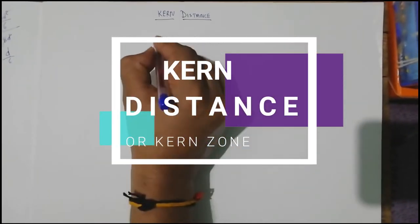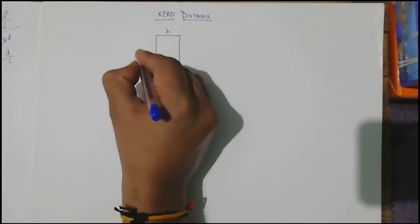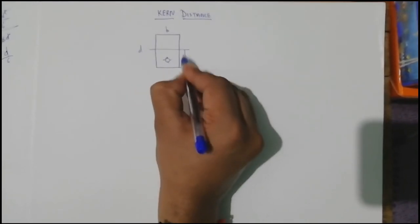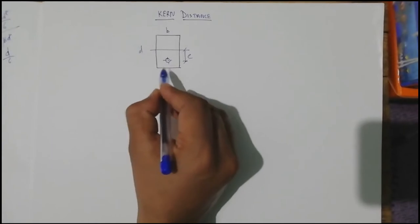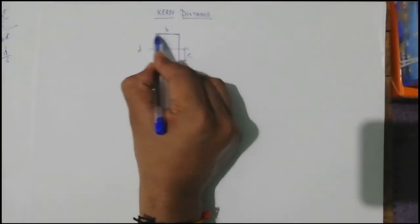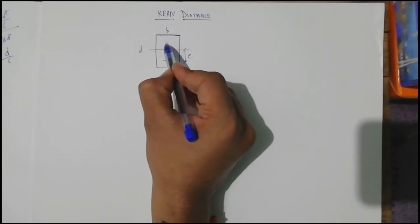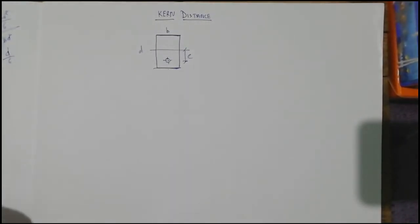In prestressed concrete sections, consider a rectangular concrete cross-section of dimension B by D, prestressed at an eccentricity E. Due to this prestressing force, tension is getting developed at the topmost fiber. If the prestressing force is applied above the neutral axis, the bottom-most fibers are subjected to tensile stresses beyond the structural capacity of the concrete, since concrete is weak in tension.